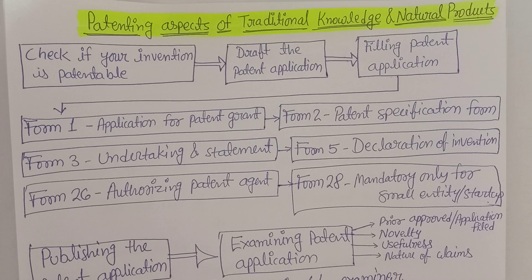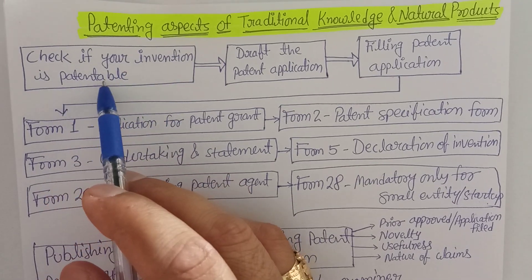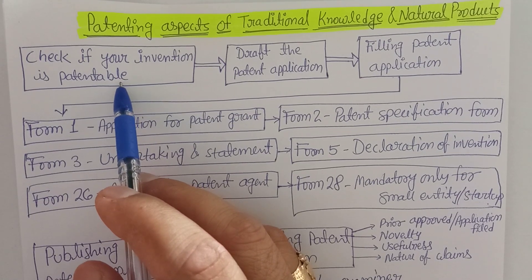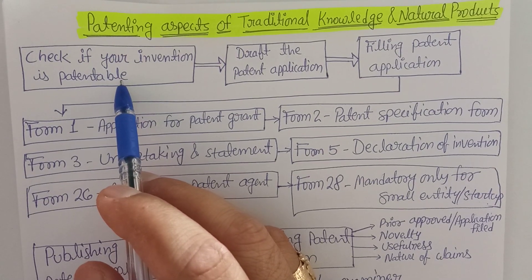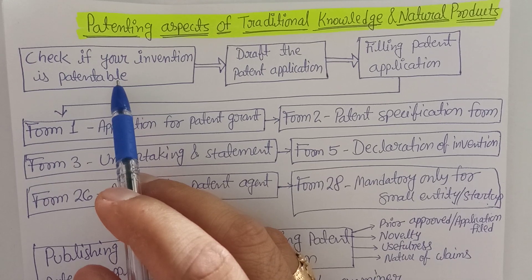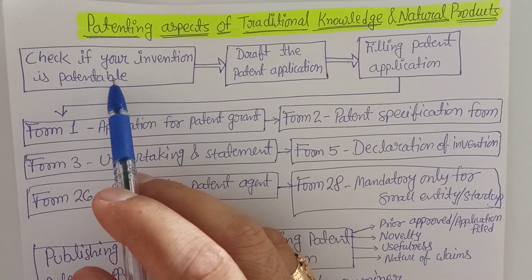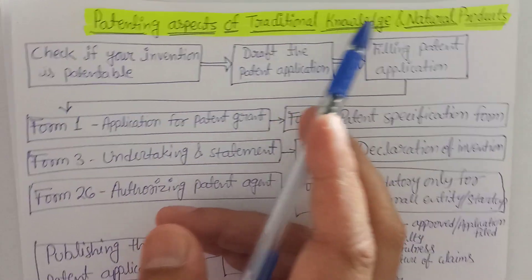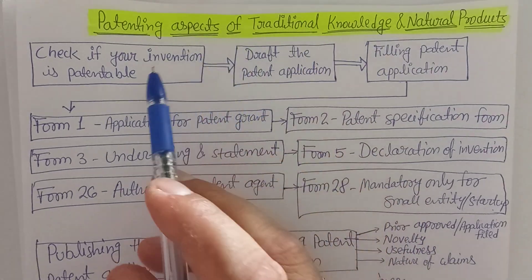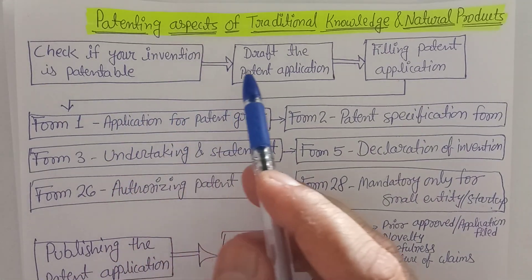When someone wants to file a patent, what kind of procedure is involved? First of all, check if your invention is patentable or not. We have already seen what are the patentable and non-patentable items — what things you can go for patent in your name or organization name. We have to check whether the particular traditional knowledge or natural product we want to patent is patentable or not.